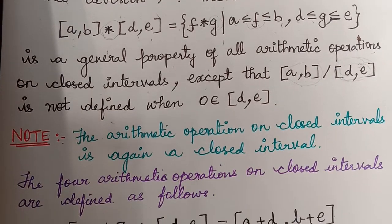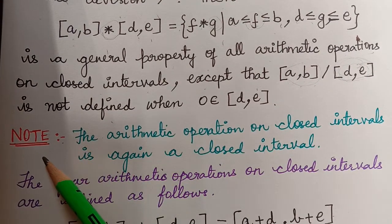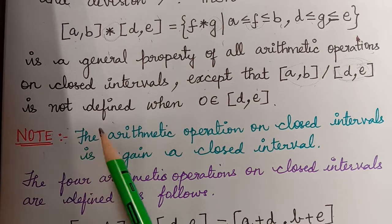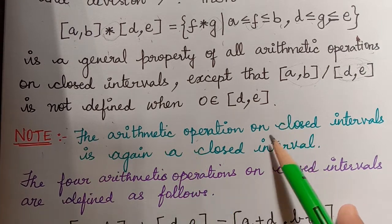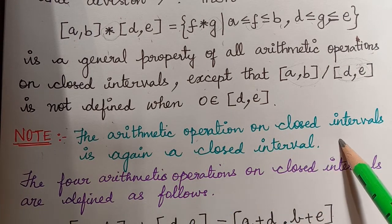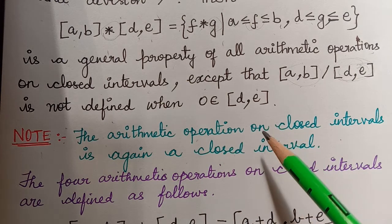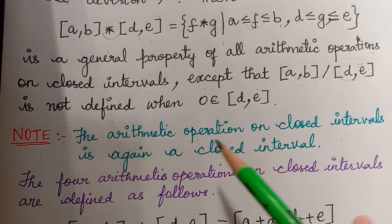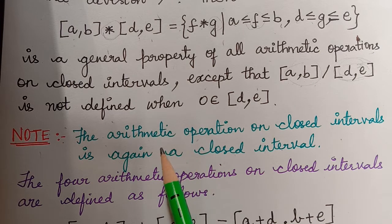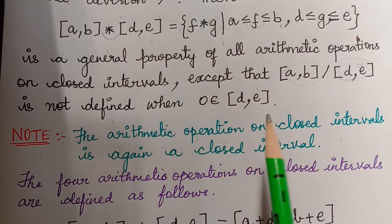Here we have a note which could be an important MCQ: the arithmetic operation on closed intervals is again a closed interval. When we consider two closed intervals and perform any arithmetic operation, the result will again be a closed interval.